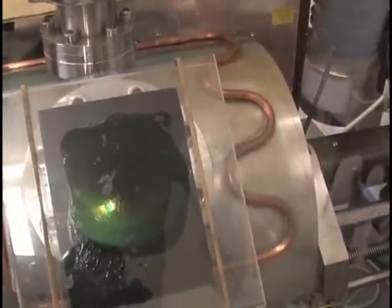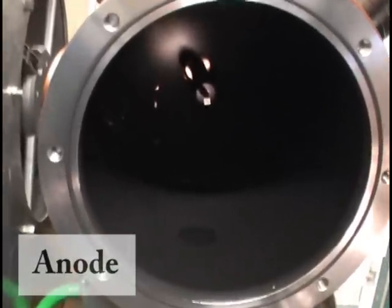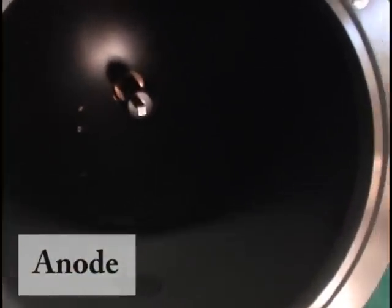Black soot is produced and starts to cover the whole chamber including the window, so after a while we can't see anything anymore. When we open the chamber, we can see how the anode is being consumed and the black powder is deposited everywhere around.